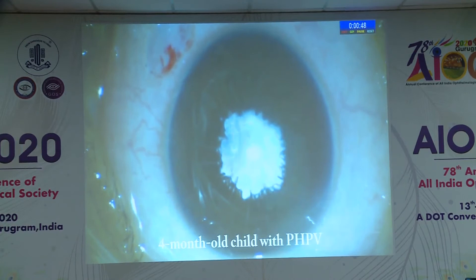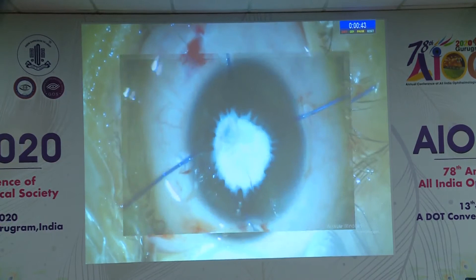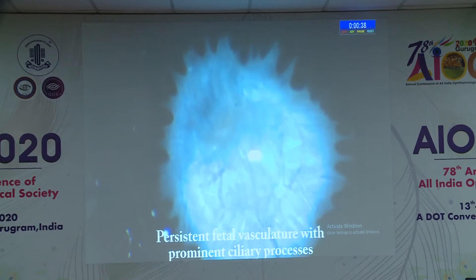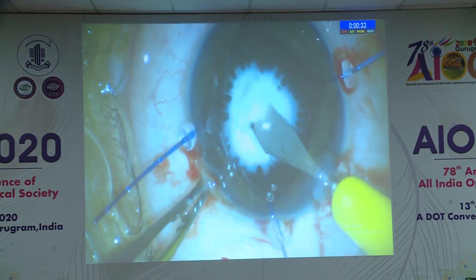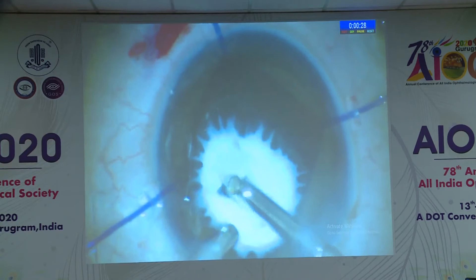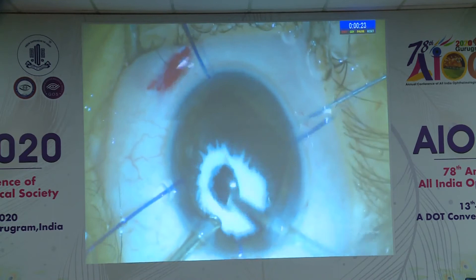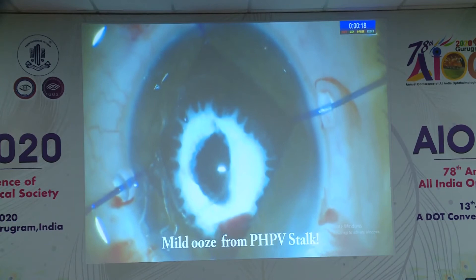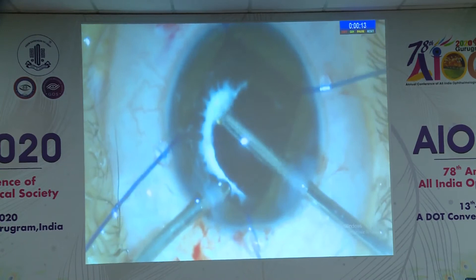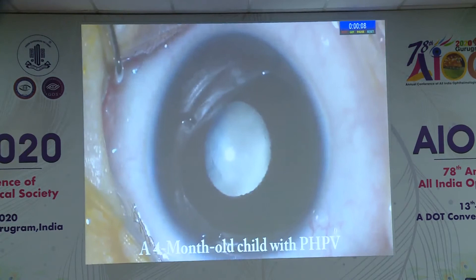This patient has PHPV - this was done more than 10 years back, a complex situation where a vascularized membrane was present. It is very difficult to cut this posterior capsule so you have to make a nick in the posterior capsule and do capsulotomy. If there is any stalk you have to do cauterization. There was a bleed in this case because cauterization was not done initially, and no IOL was implanted in this child.